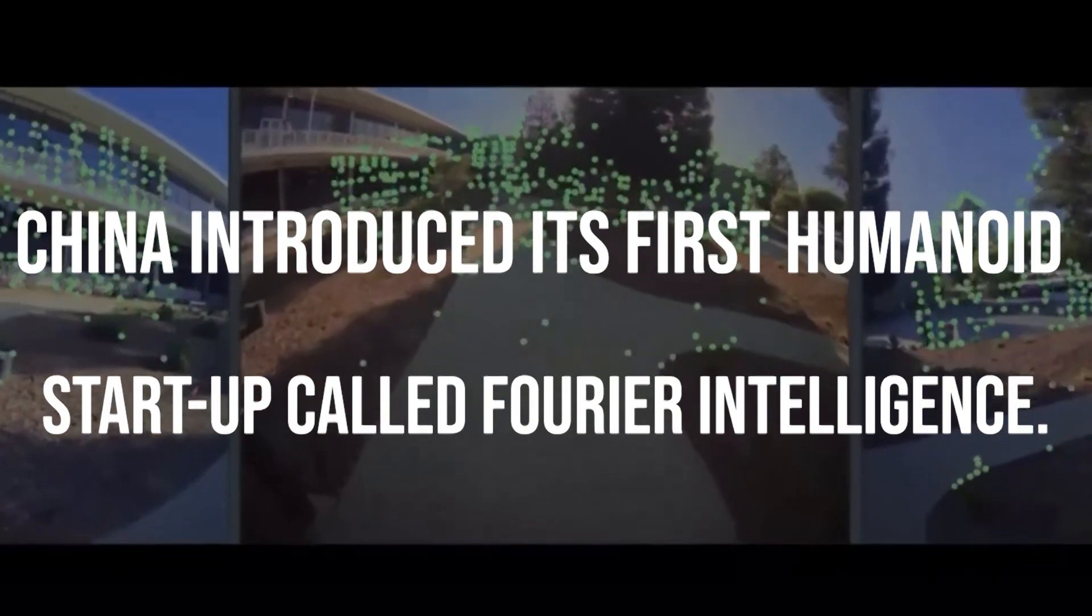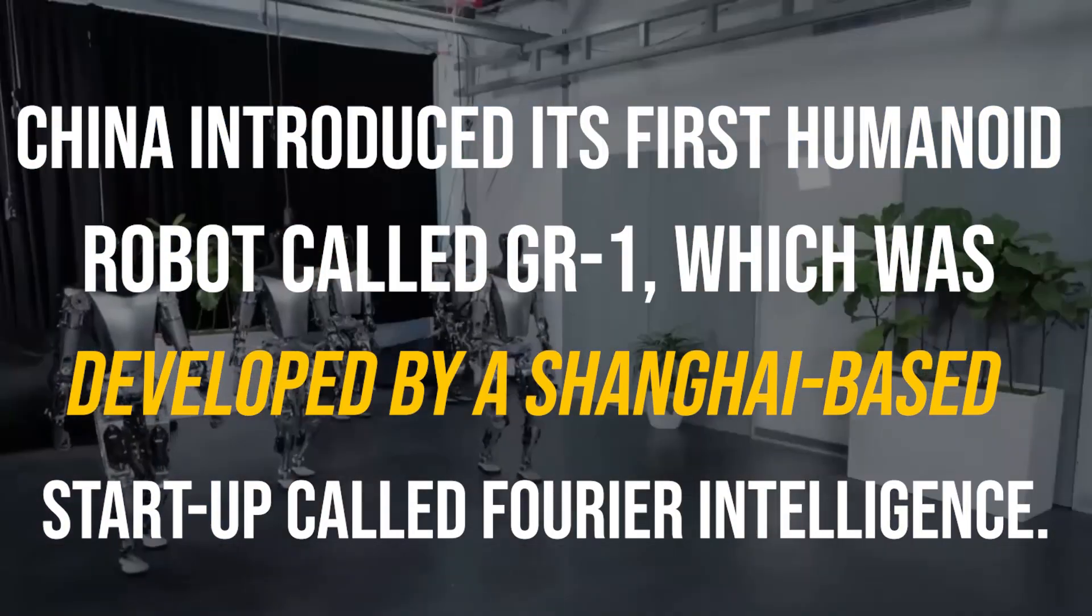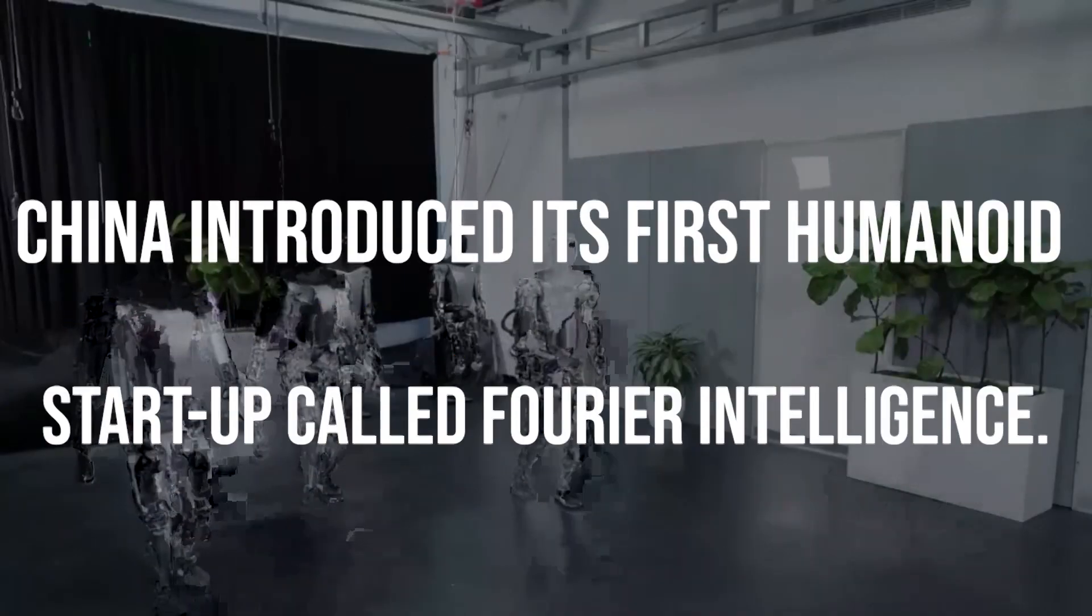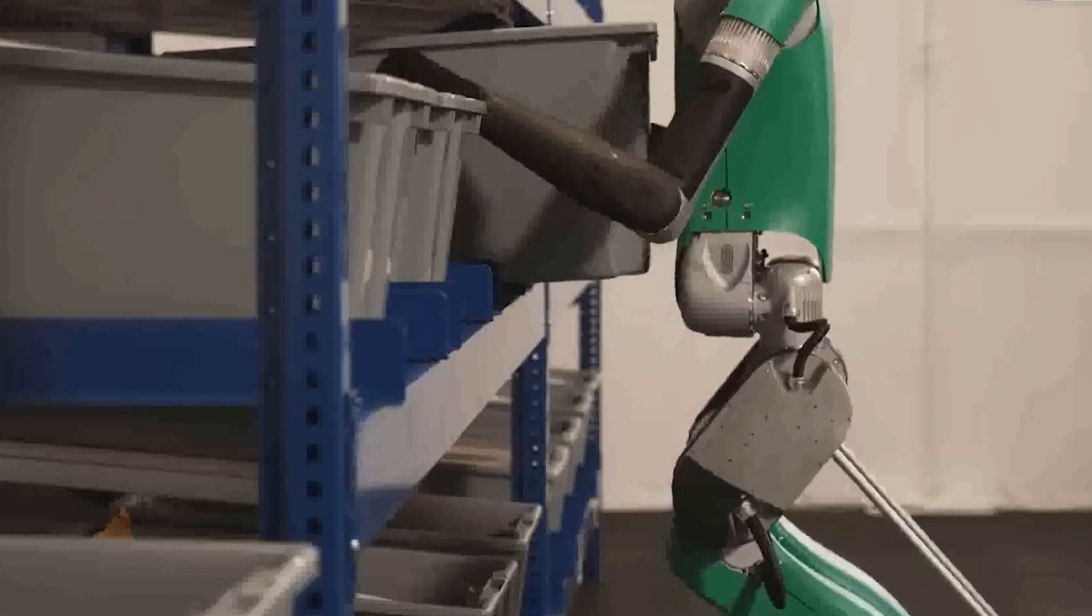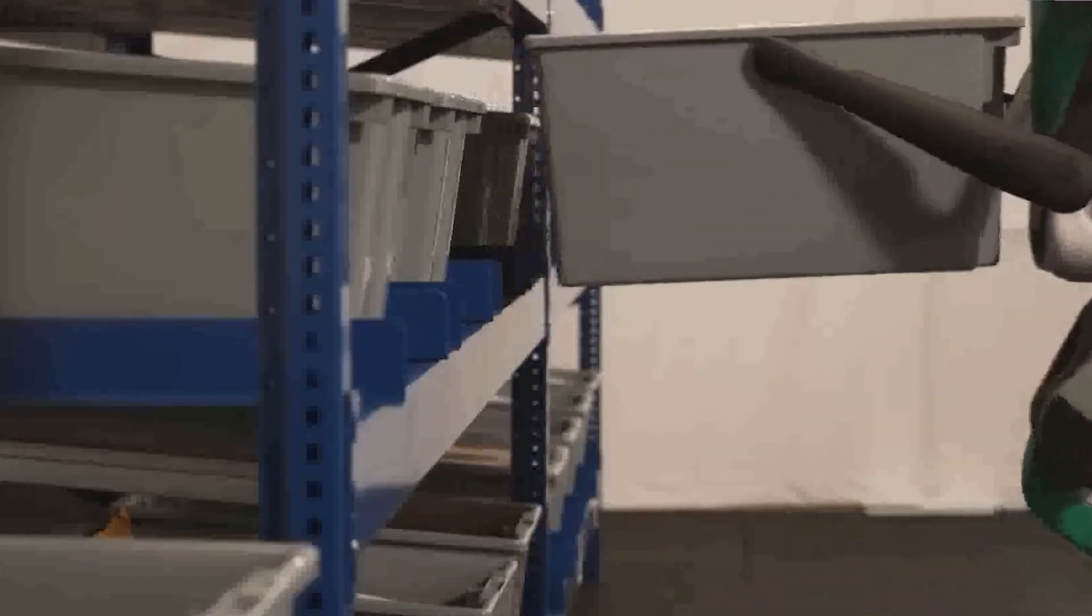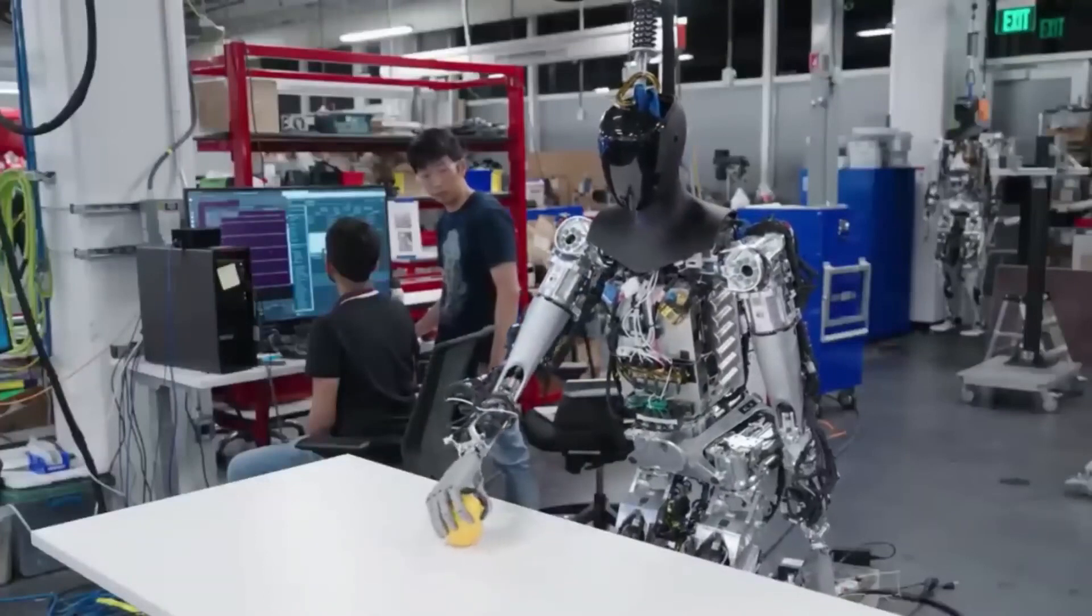China introduced its first humanoid robot called GR1, which was developed by a Shanghai-based startup called Fourier Intelligence. GR1 can walk on two legs, carry heavy loads, avoid obstacles, and perform simple tasks. GR1 is designed to help with the challenges posed by China's aging population and shortage of caregivers.